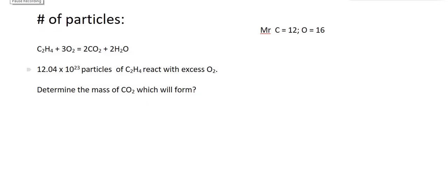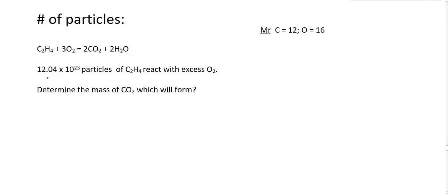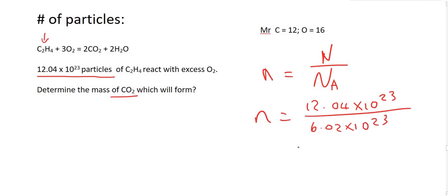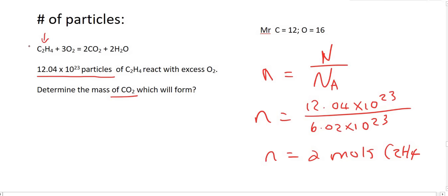The next way they could ask is by using the number of particles. Here we can see the equation is balanced because there are numbers in the front. They give us the number of particles of C2H4 and want us to work out the mass of CO2 that will form. We know there's a way to work out moles from number of particles: n over Na, where Na is Avogadro's constant. The number of particles given is 12.04 times 10 to the 23, and Avogadro's constant is 6.02 times 10 to the 23. If you work this out it simplifies nicely — you get 2 moles of C2H4.